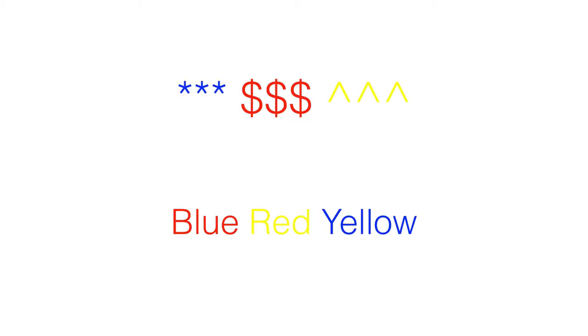For example, try to name the colour of the ink and not the word. You'll find this far easier with the top row than with the bottom row.